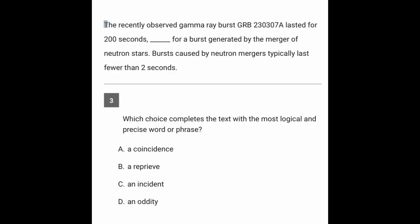So let's read generally. The recently observed gamma ray burst blank lasted for 200 seconds, blank for a burst generated by the merger of neutron stars.